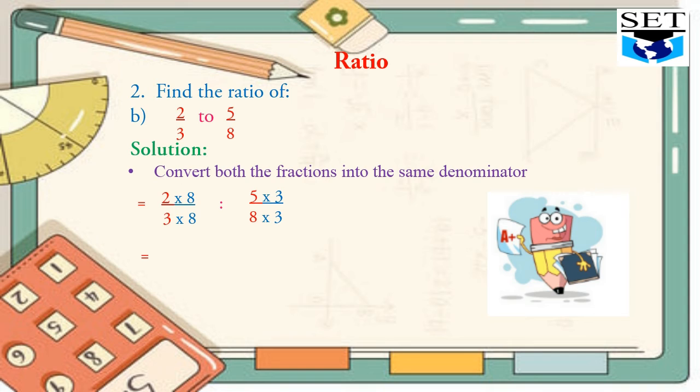2 times 8 is 16, 8 times 3 is 24. 5 times 3 is 15, 8 times 3 is 24. Now you can see both the denominators are same. If the denominators are same, the numerator's value represents the ratio. So 16 to 15 is the ratio of 2/3 to 5/8.